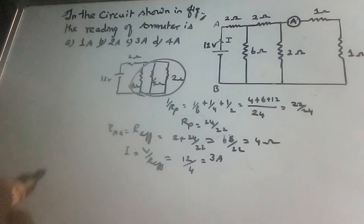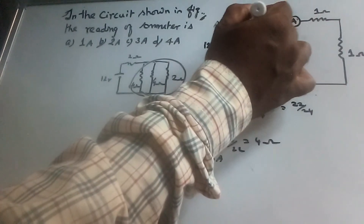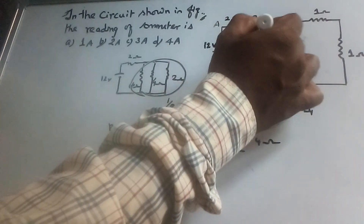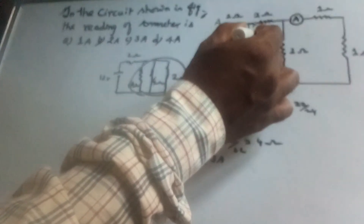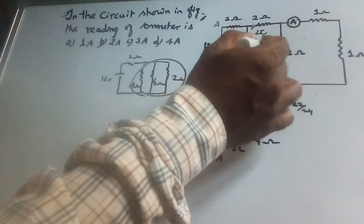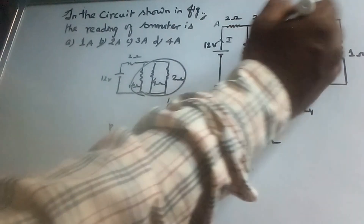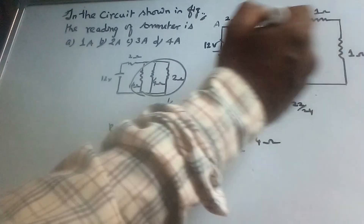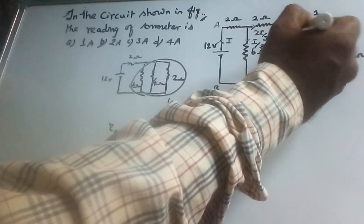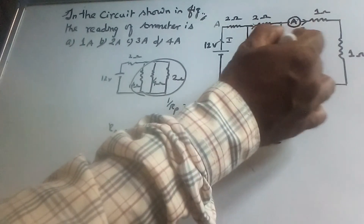Now consider the circuit. This current I, that is 3 ampere, flows through the first 2 ohm resistor. Here the current flow through the 2 ohm branch is 2I by 3, that is two-thirds of I. The remaining one-third of current, I by 3, flows through the 6 ohm. This 2I by 3 now divides into two sections: I by 3 through the ammeter as well as the 1 ohm resistor since they are in series, and the remaining I by 3 through the other branch.